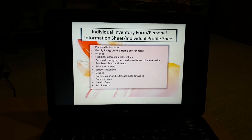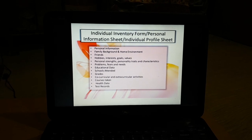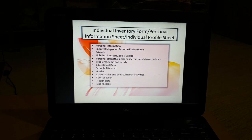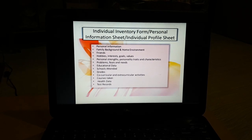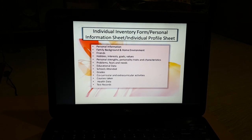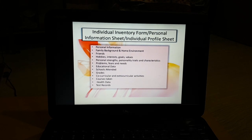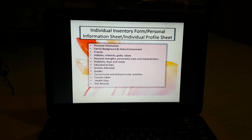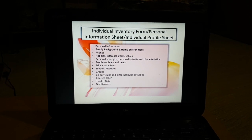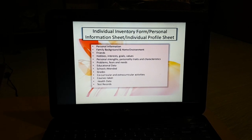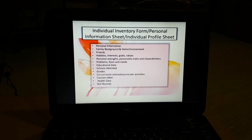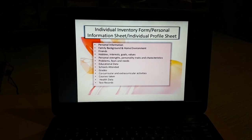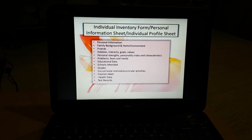You might wonder: what is the difference between cumulative records and inventories? They are very similar. A cumulative record is created for a student covering their entire school life — from the time they take admission until their passing year. Inventories might include the cumulative record as well.